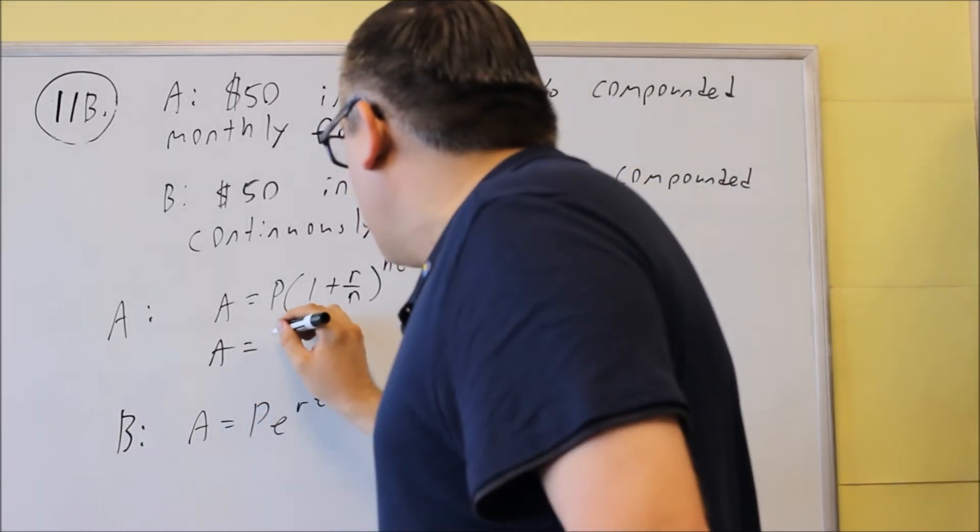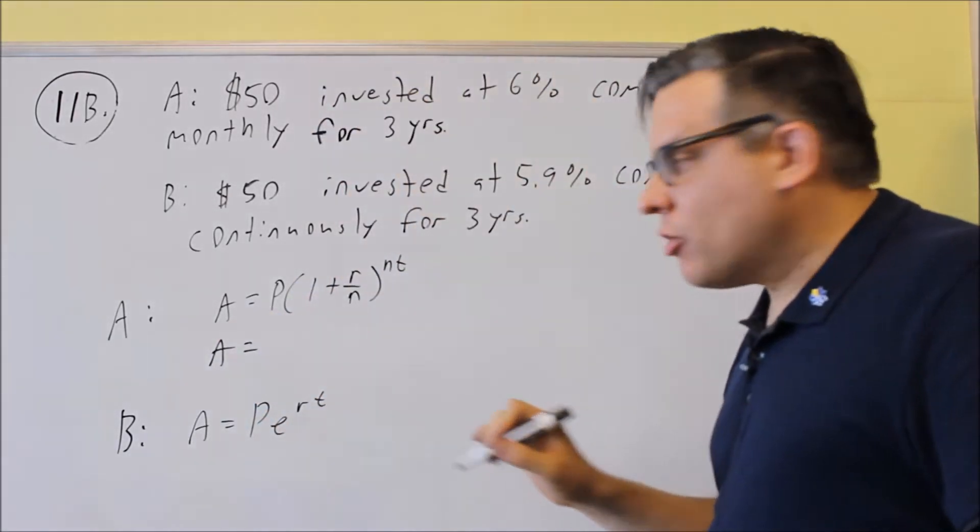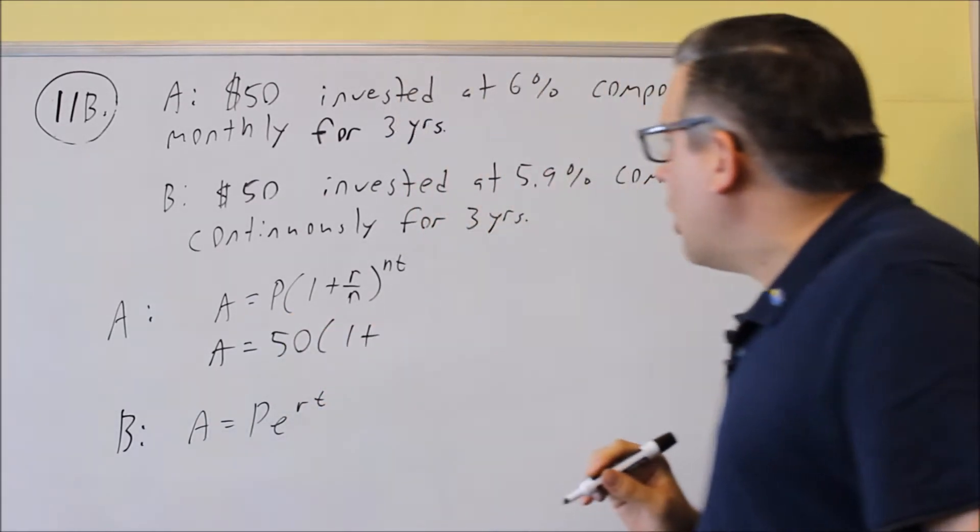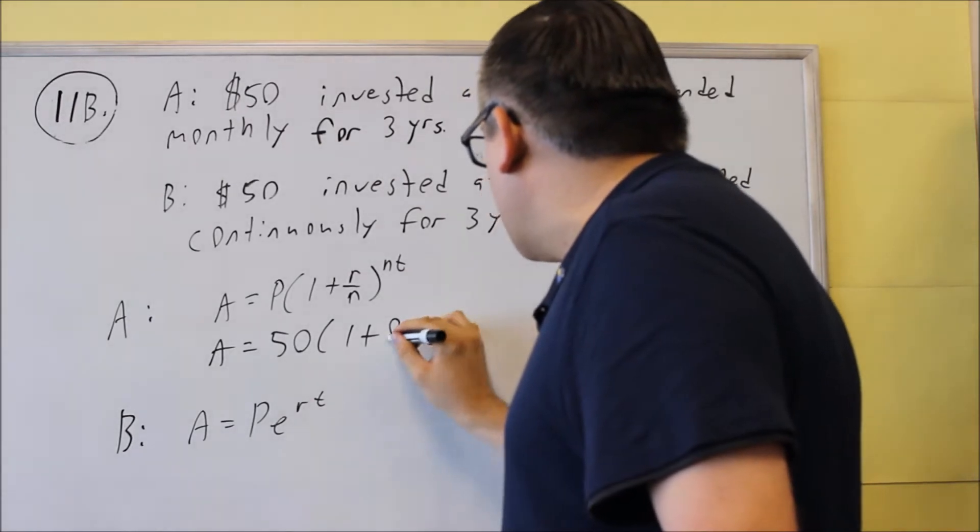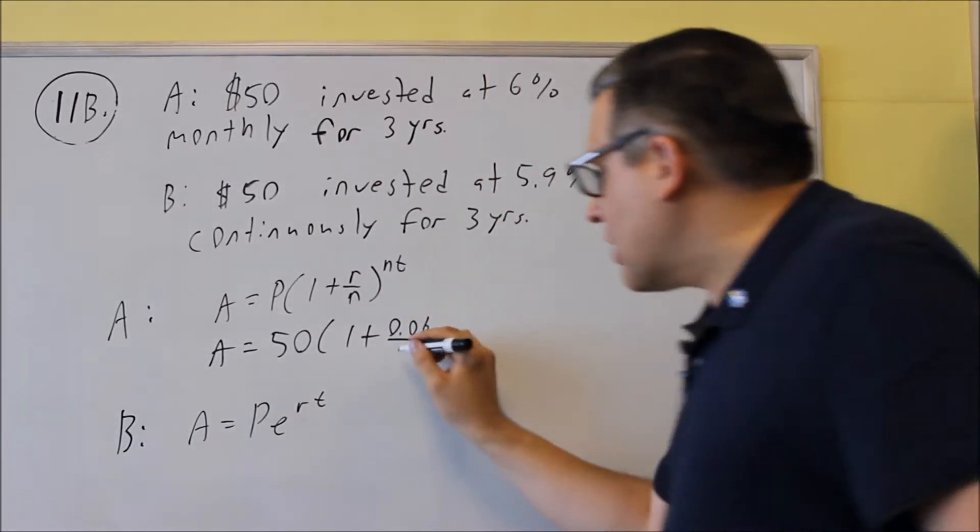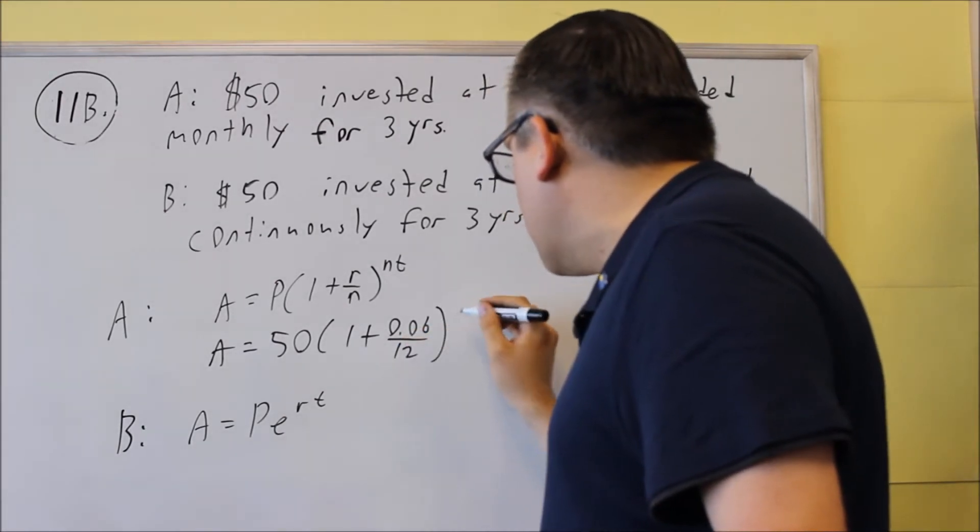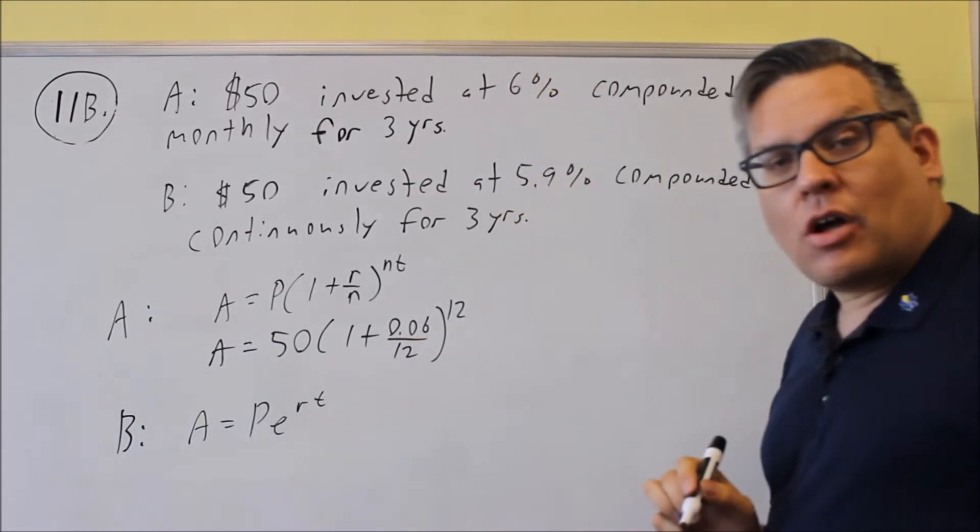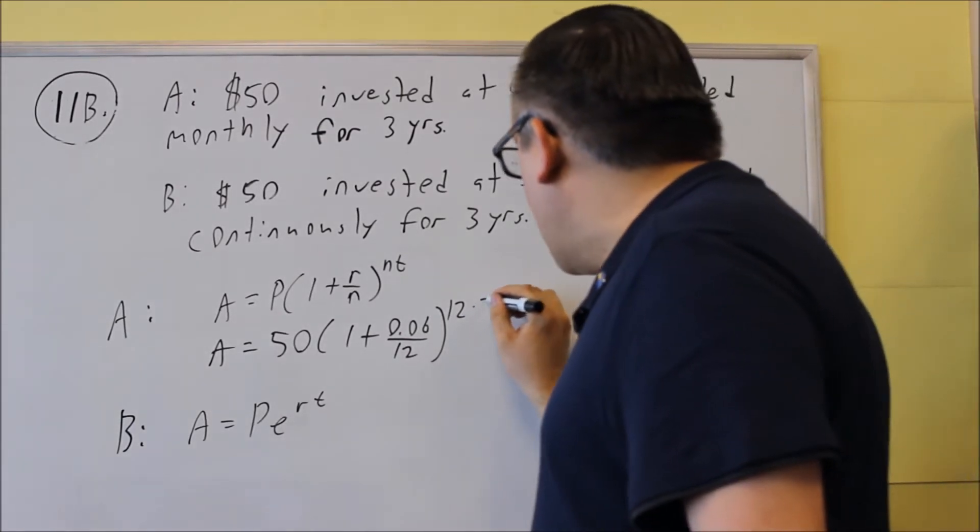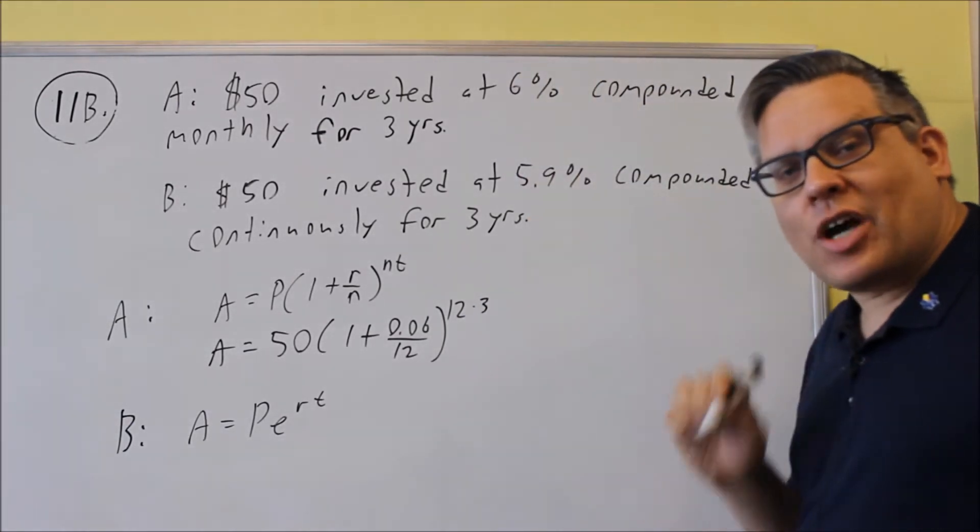We're going to put in our P, your principal, which is 50. One plus R over N, your rate is 0.06. Now monthly means that happens 12 times in one year. So we're going to put a 12 there for your N, and the 12 also goes up here as well. You're multiplying that again by, we have the same time, three years.